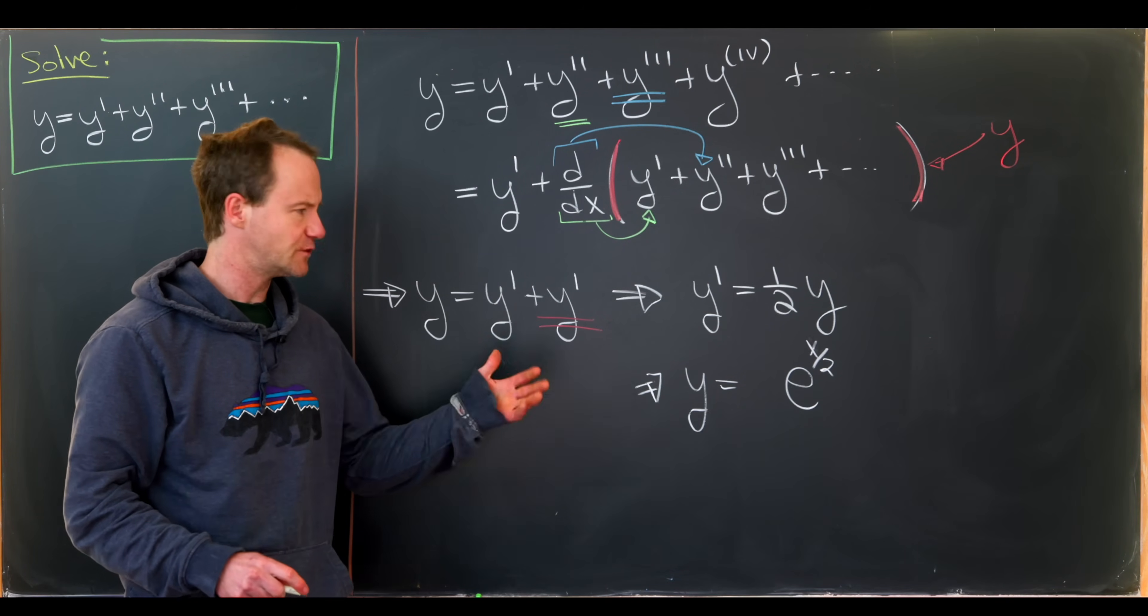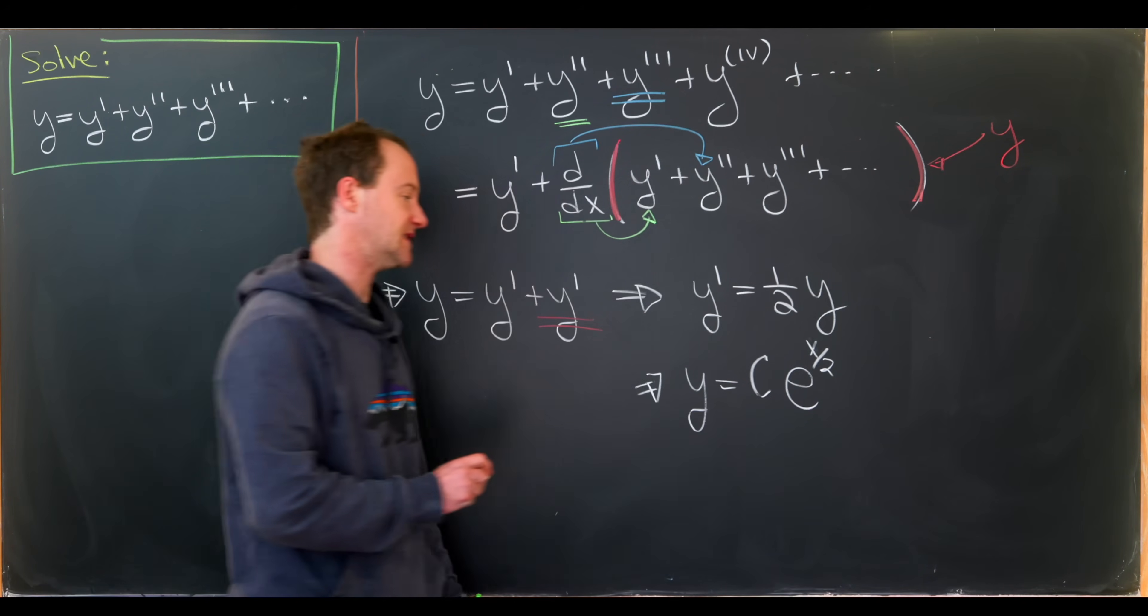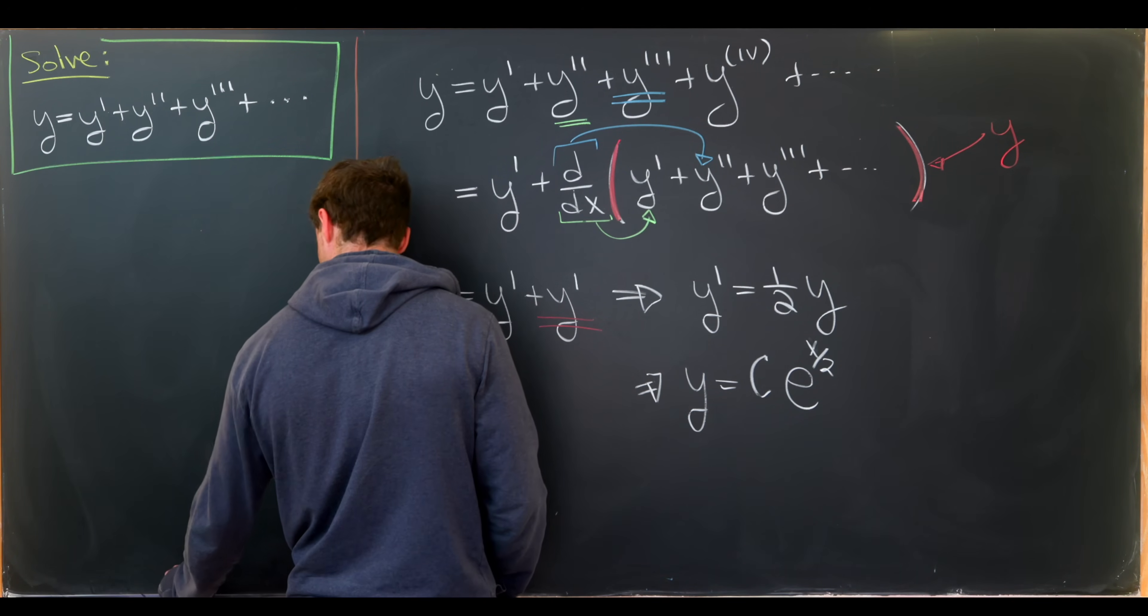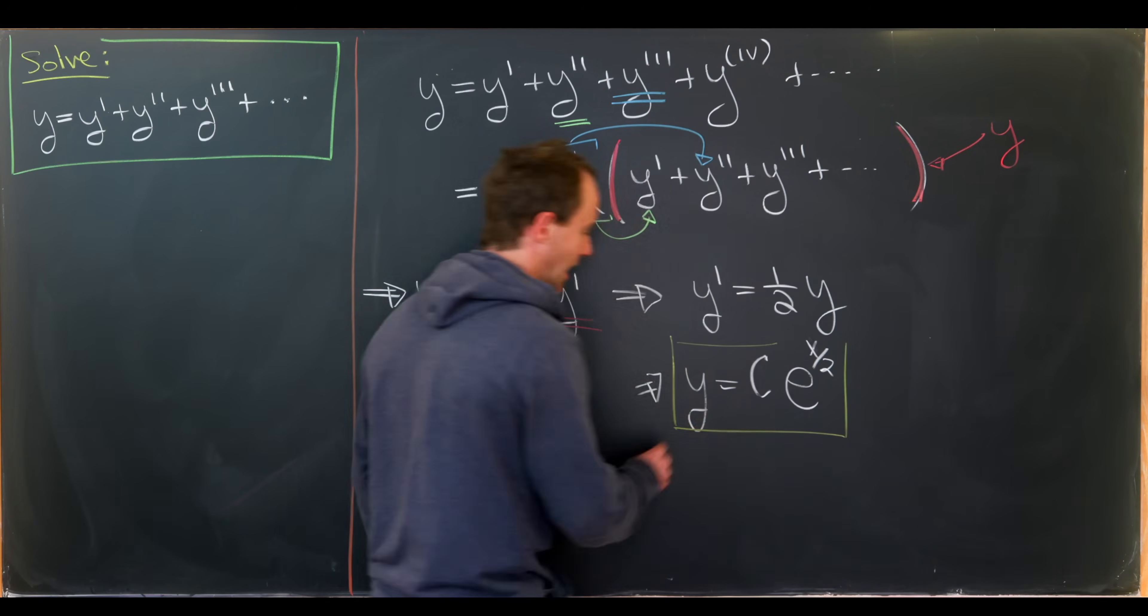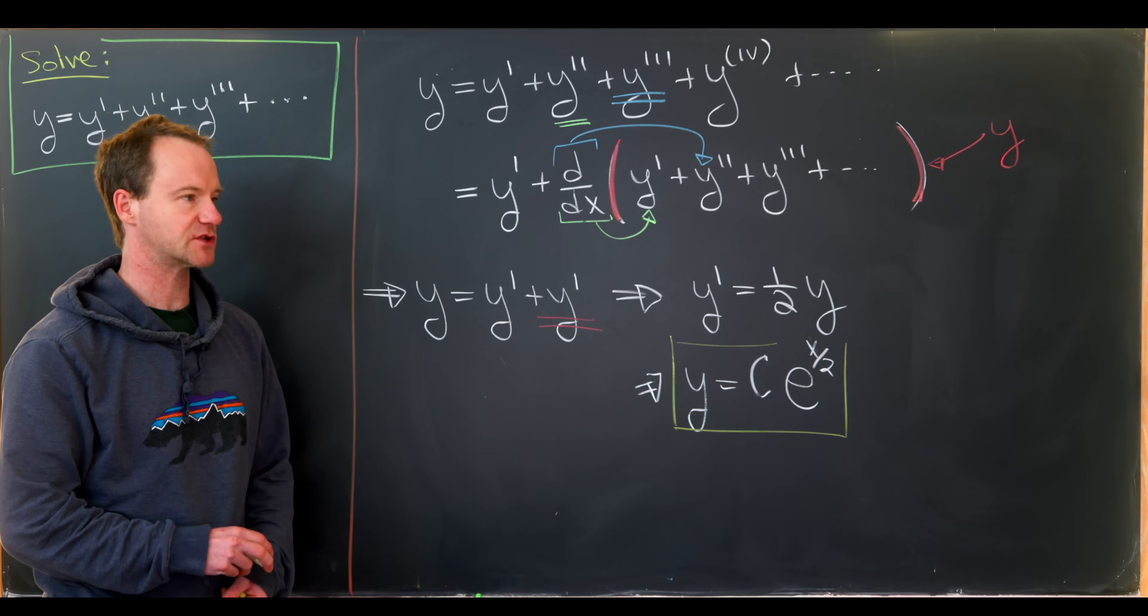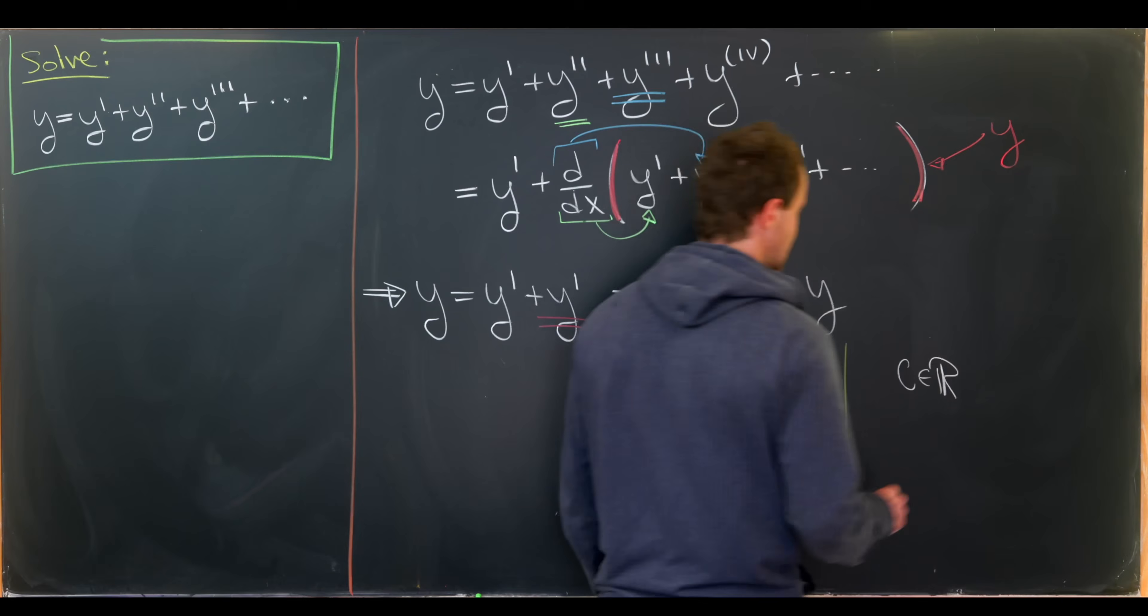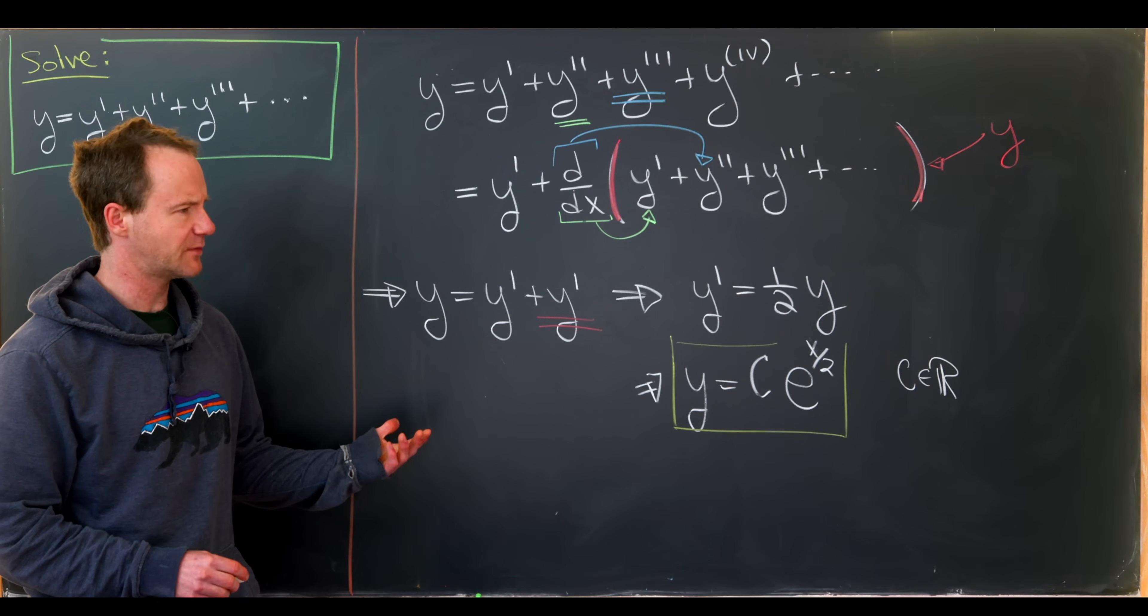But in fact we could take any constant multiple of that, so I'll write a c here because that'll also satisfy the above differential equation. So there we have it. We have a solution to our goal differential equation. In fact we have an infinite family of solutions but it's a one dimensional family. Here c may be any real number.